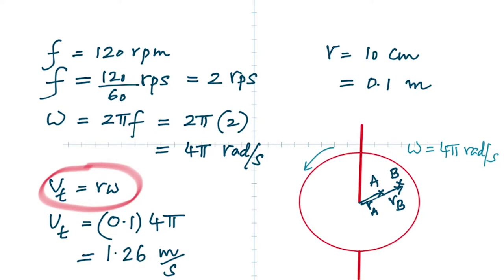The disk is rotating with a constant angular velocity omega. Focusing on particle A — does it have any acceleration? Since omega is constant, if I asked whether it has angular acceleration, the answer would be no. Alpha is zero because alpha equals dω/dt and omega is not changing.